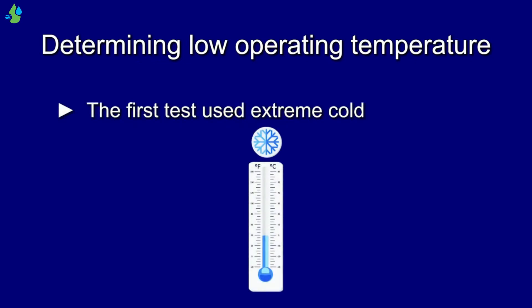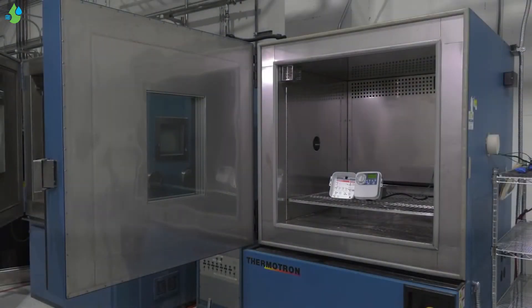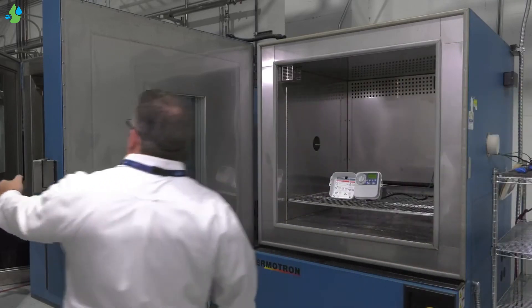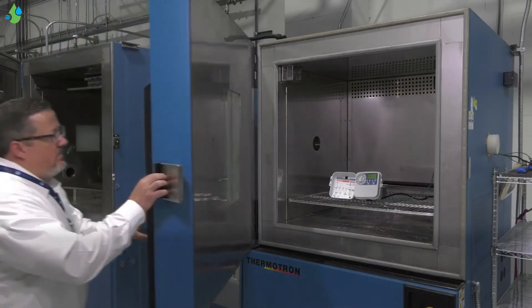Determining Low Operating Temperature. The first test used extreme cold. The unit is placed inside a HALT chamber, which provides extreme temperatures.